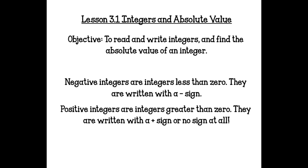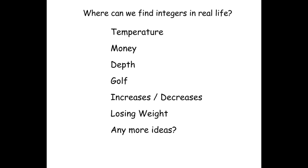Negative integers are integers that are less than zero. They are written with a negative sign in front of them. Positive integers are integers greater than zero. They are written with a plus sign or no sign at all — typically no sign at all.